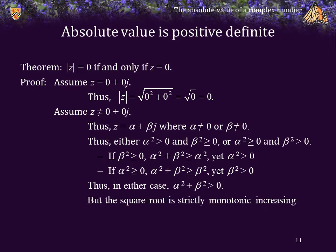The square root function is strictly monotonic increasing, therefore the absolute value of z, equal to the square root of the left-hand side, is greater than the square root of the right-hand side, which is equal to 0. Thus, we've demonstrated the alternative.